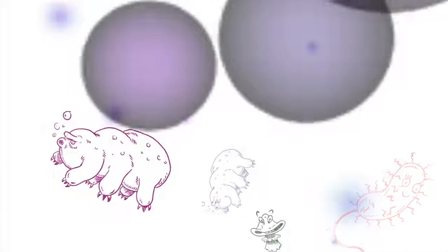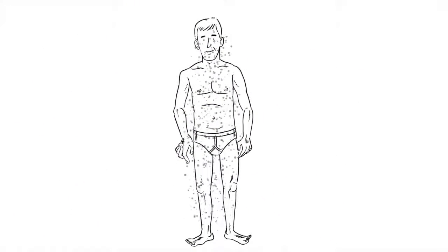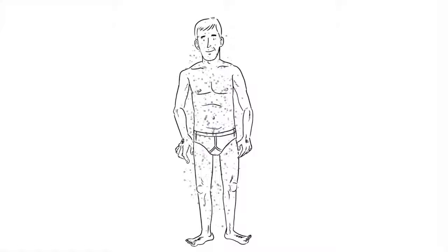These tiny organisms make up our microbiota, and most of them, about 95%, live in our gastrointestinal tract, more commonly known as our gut.